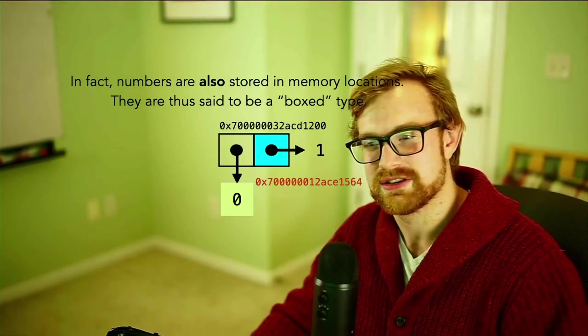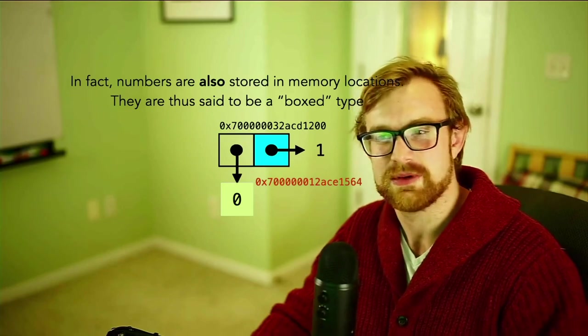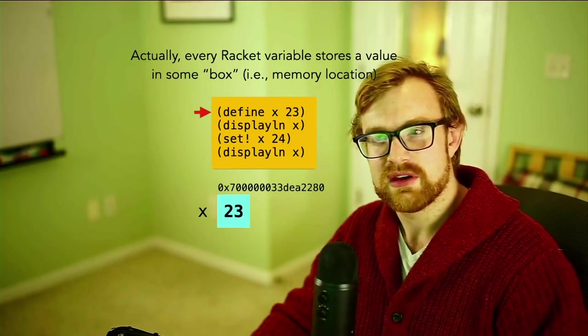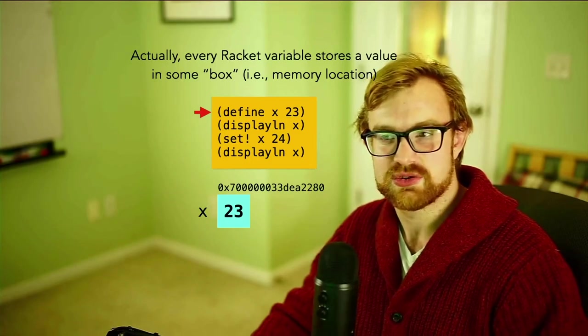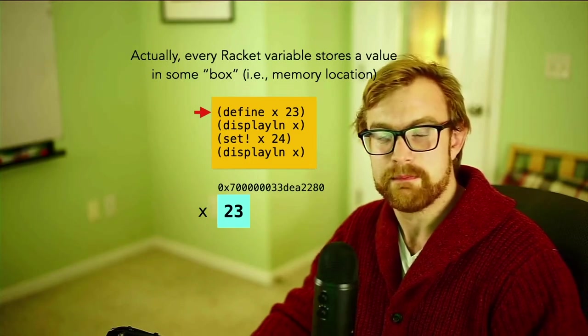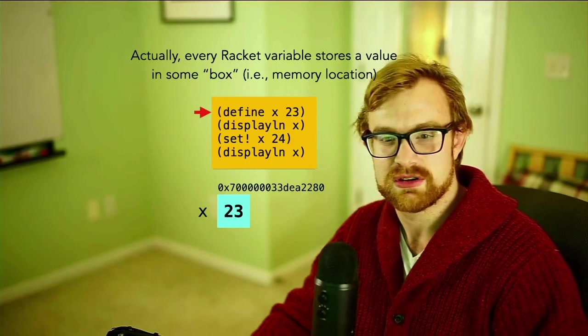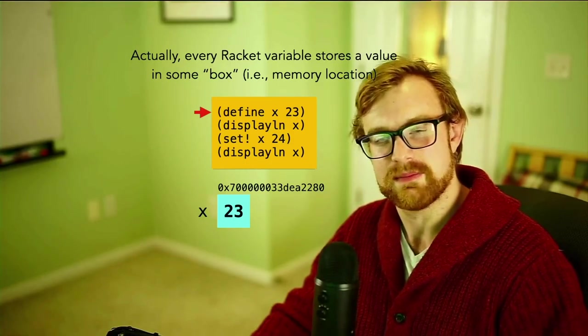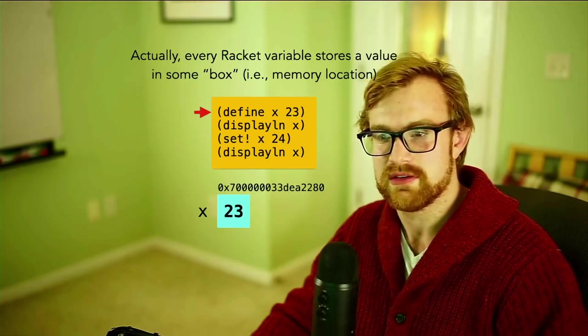But it is important to understand that these things are actually being held somewhere. And to really hammer it home, every Racket variable actually stores its value in some box or memory location. So we'll use the term box to just represent the fact that there is some memory location corresponding to a value.